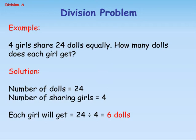Solution. Number of dolls equals 24. Number of sharing girls equals 4. Each girl will get equals 24 divided by 4 equals 6 dolls.